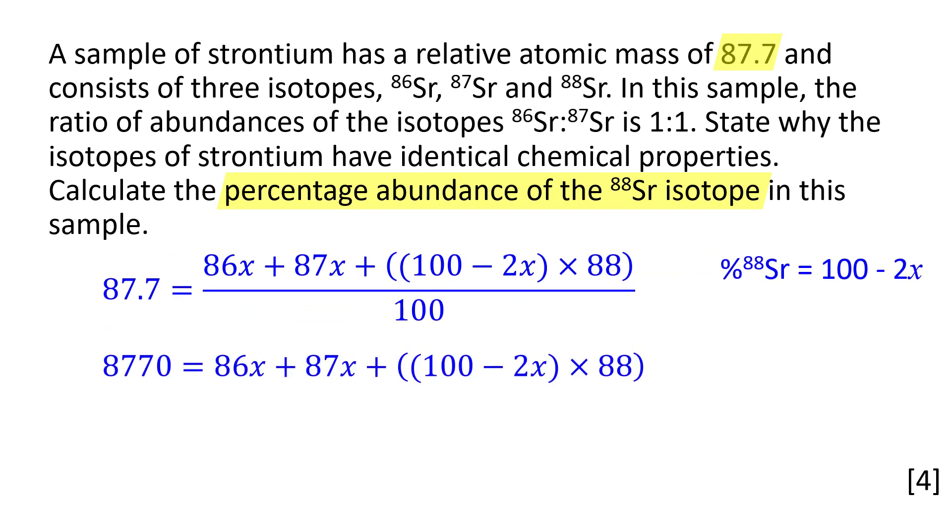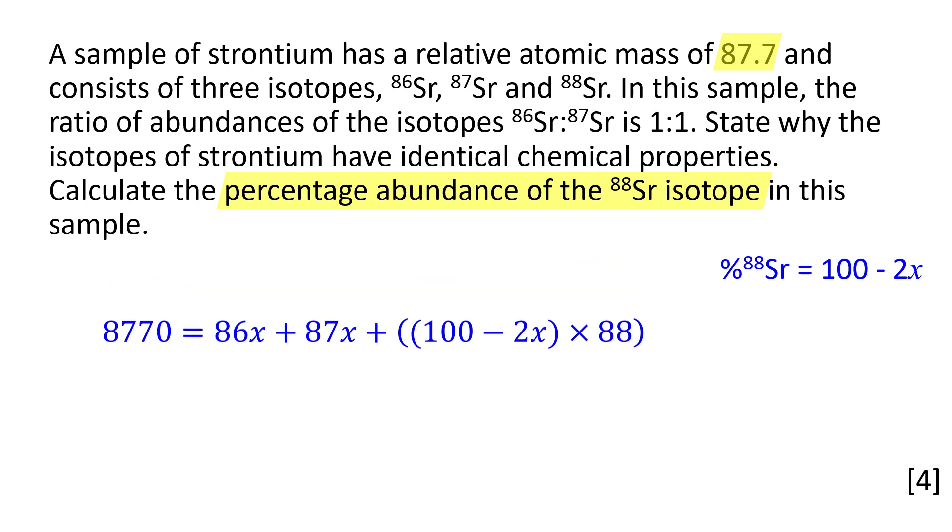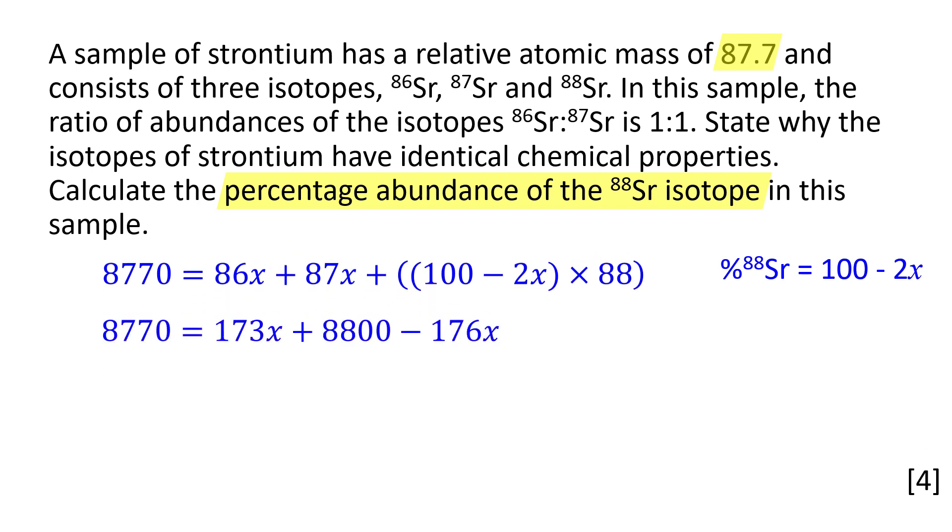Multiply out the brackets. Collect like terms. Take the x terms to the left of the equation and move the 8770 to the right.